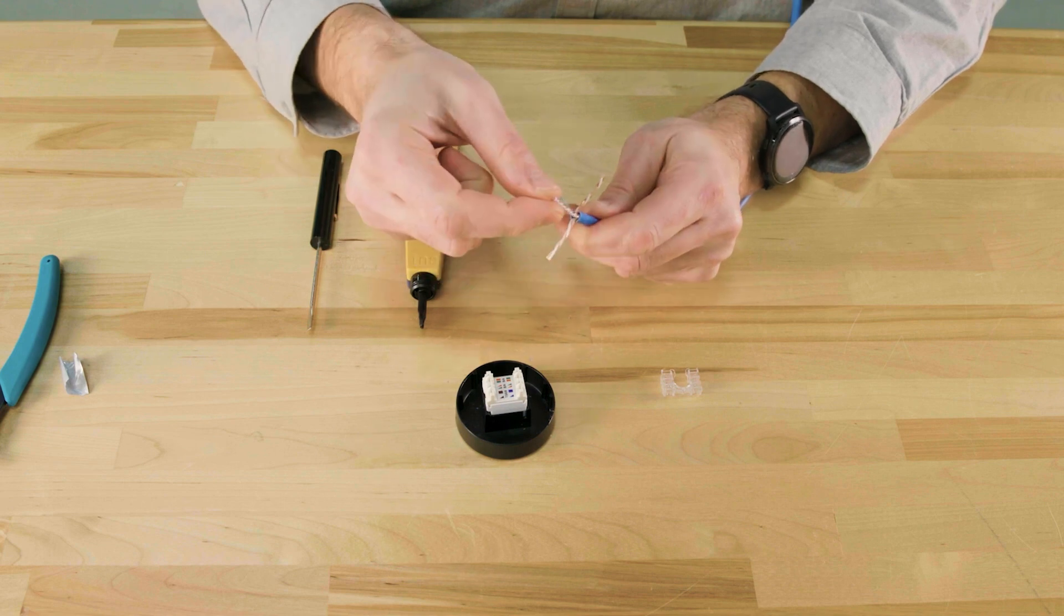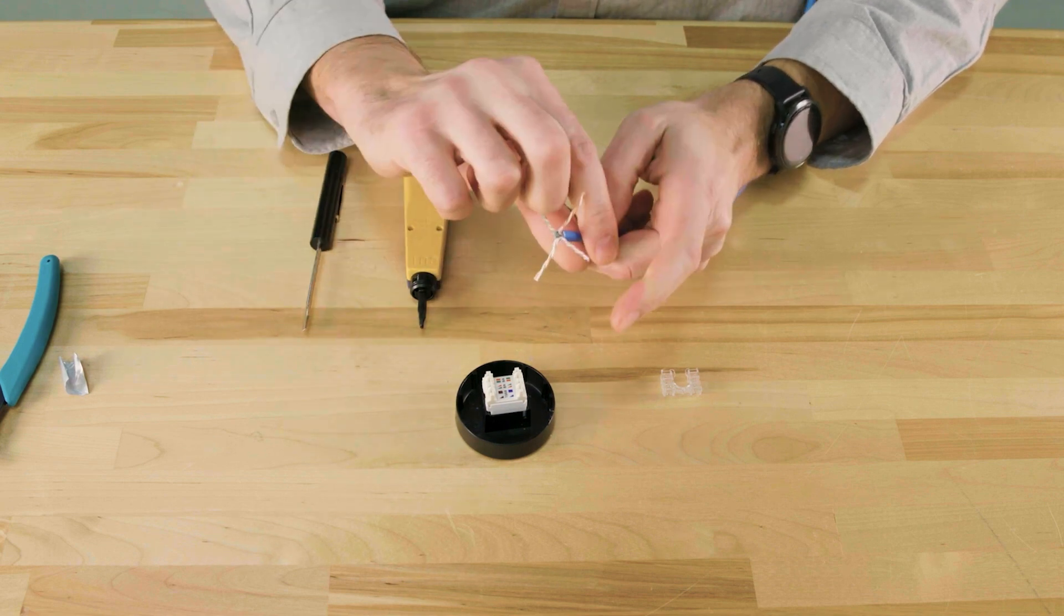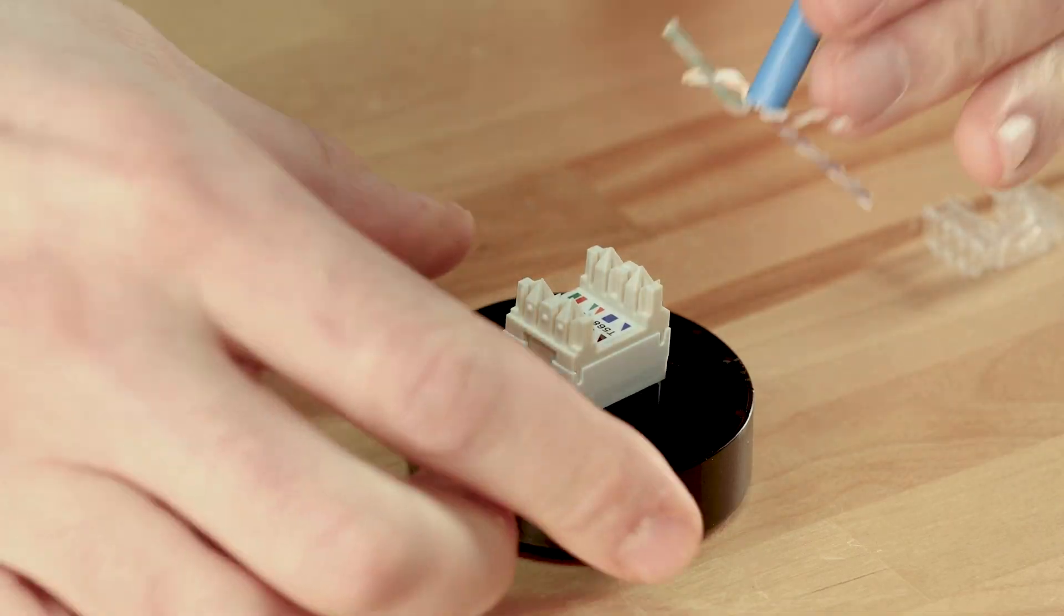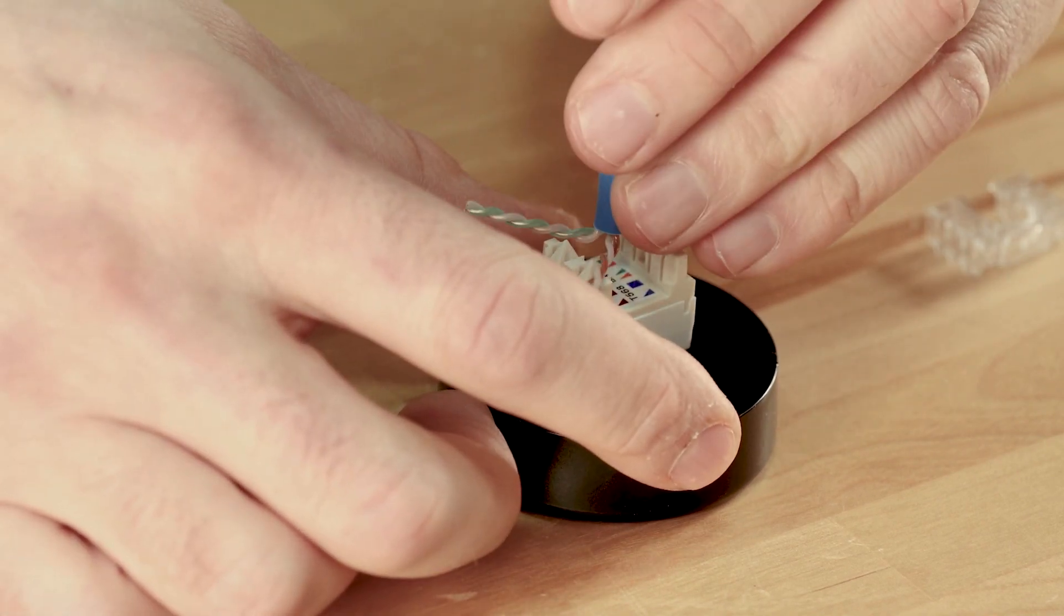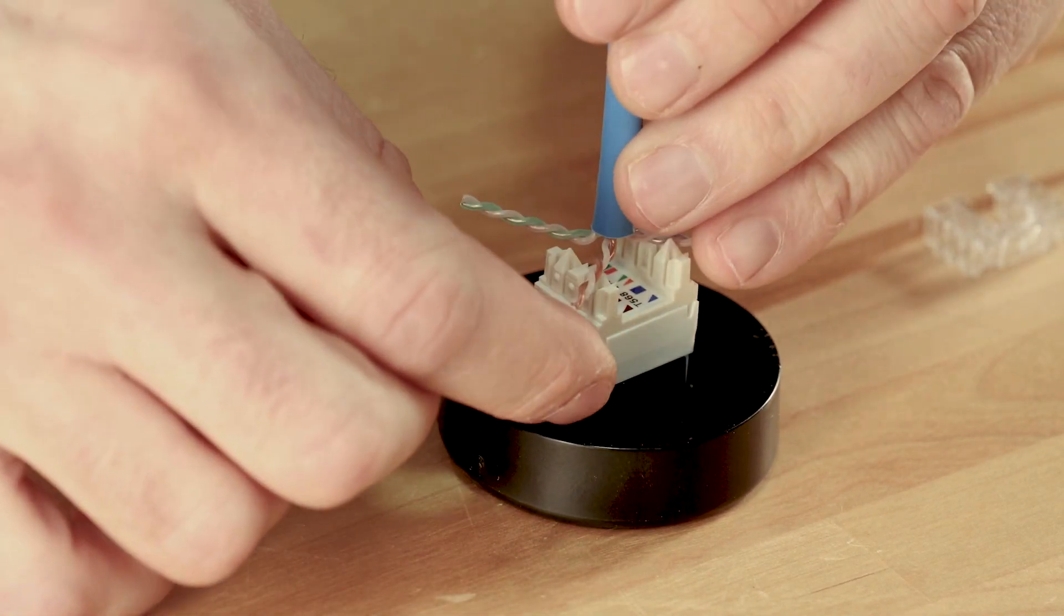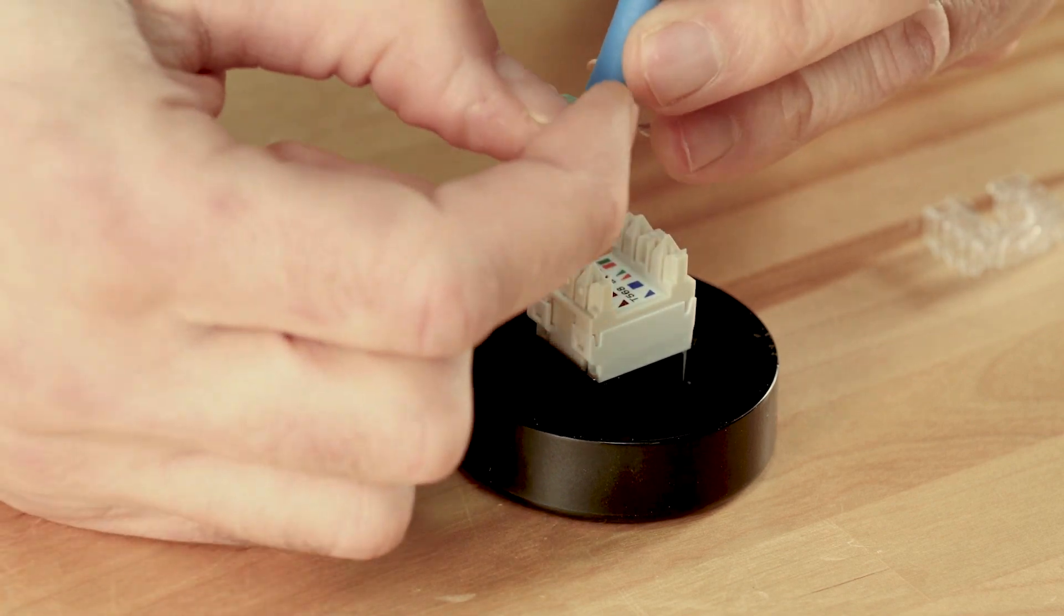Next, fan the wires out 90 degrees from each other. Rotate the base so that the brown pair is in the upper right corner. This is cable side A, so all the colors go directly in the jack the way it's set.